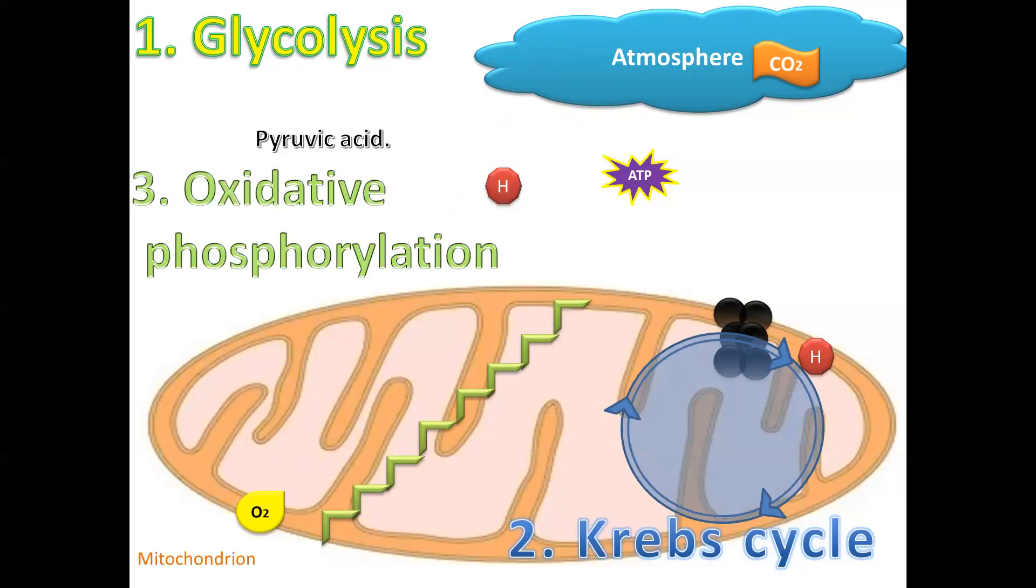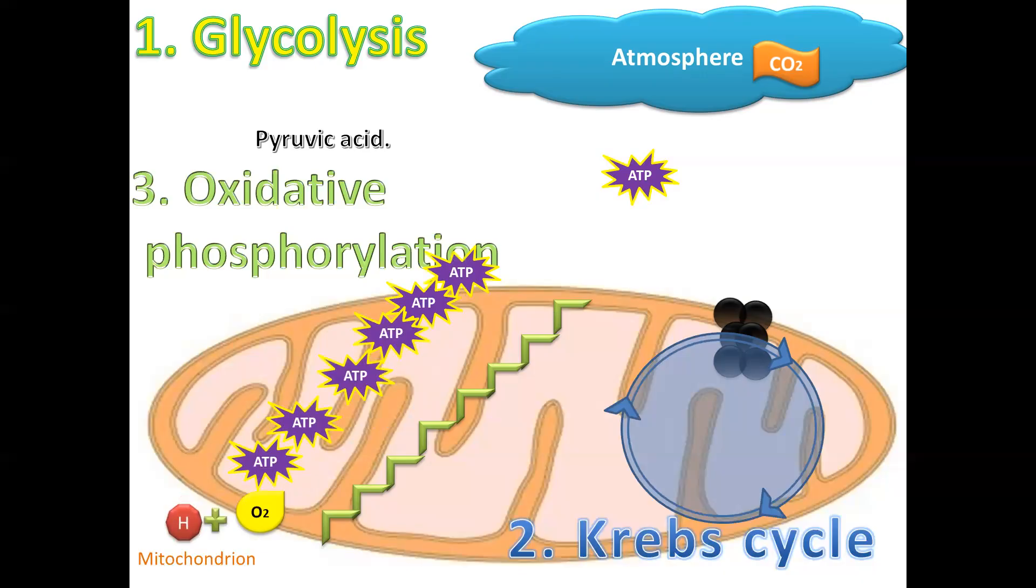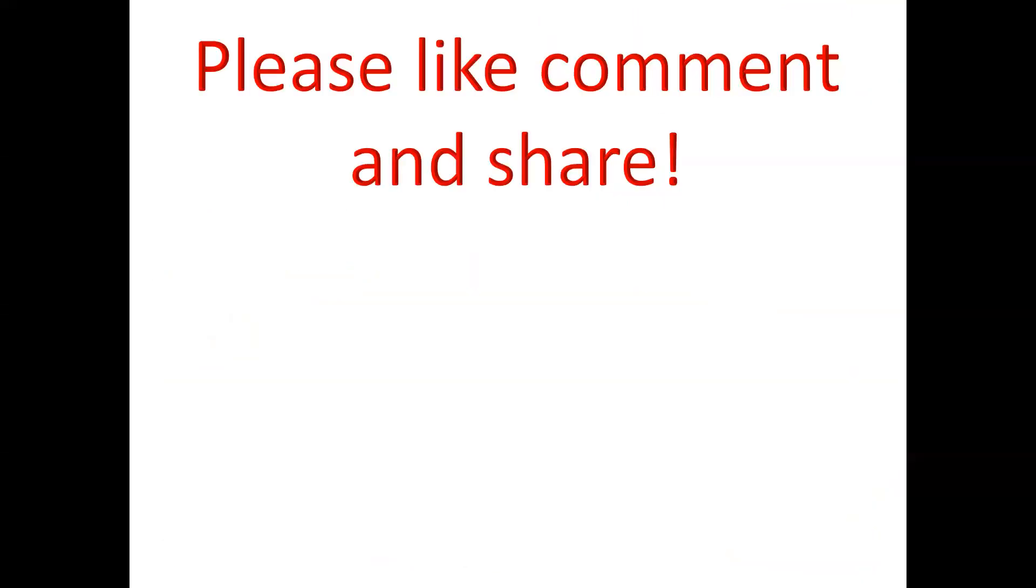In oxidative phosphorylation, we require the hydrogens produced during glycolysis in the Krebs cycle. We have coenzymes that carry the hydrogen to oxidative phosphorylation, and we have this hydrogen then being passed from one coenzyme to another. In that process we have ATP being formed, a large number of ATP. This hydrogen that has lost its energy will then join with the oxygen to form water.